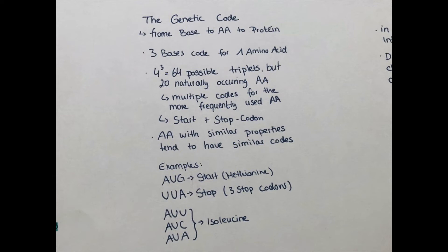And as we have 64 possible triplets and only 20 naturally occurring amino acids, there are many possible combinations left. Multiple codes are used for the more frequently used amino acids.